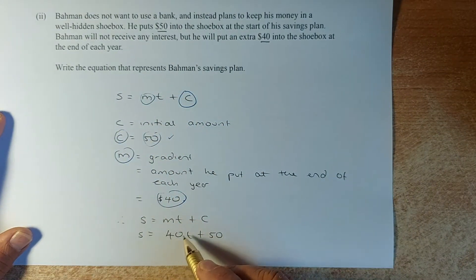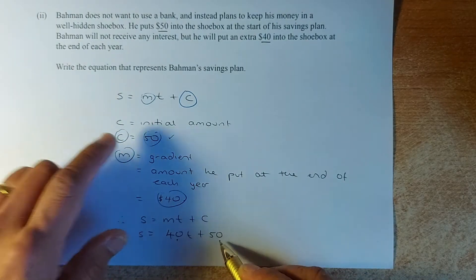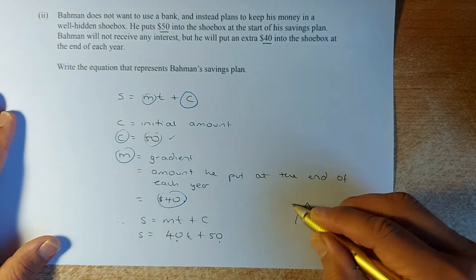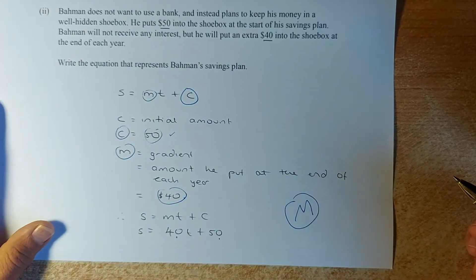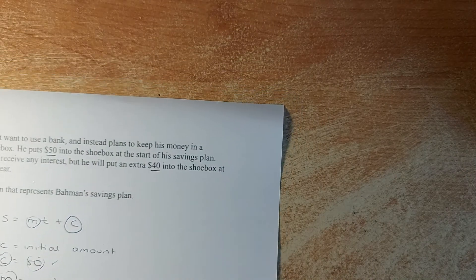So in this case, he is going to put $40. So your m is going to be 40. So once you know your m, which is 40, and you know your c is 50, put into the equation. So S, the saving, equals to 40t plus 50. And that will give you a merit in that question. Not too bad, right? Great.